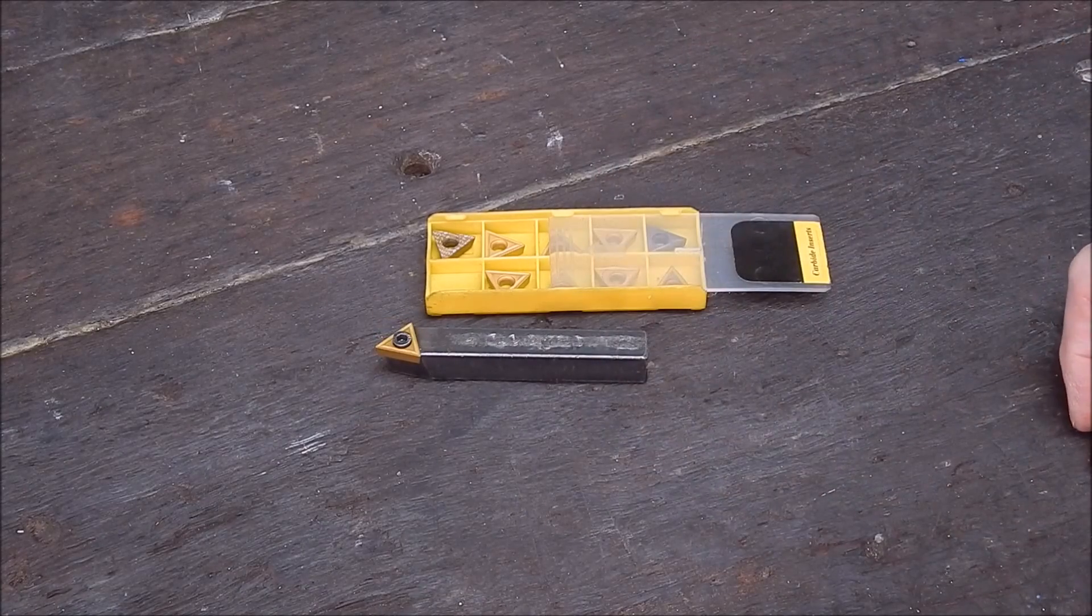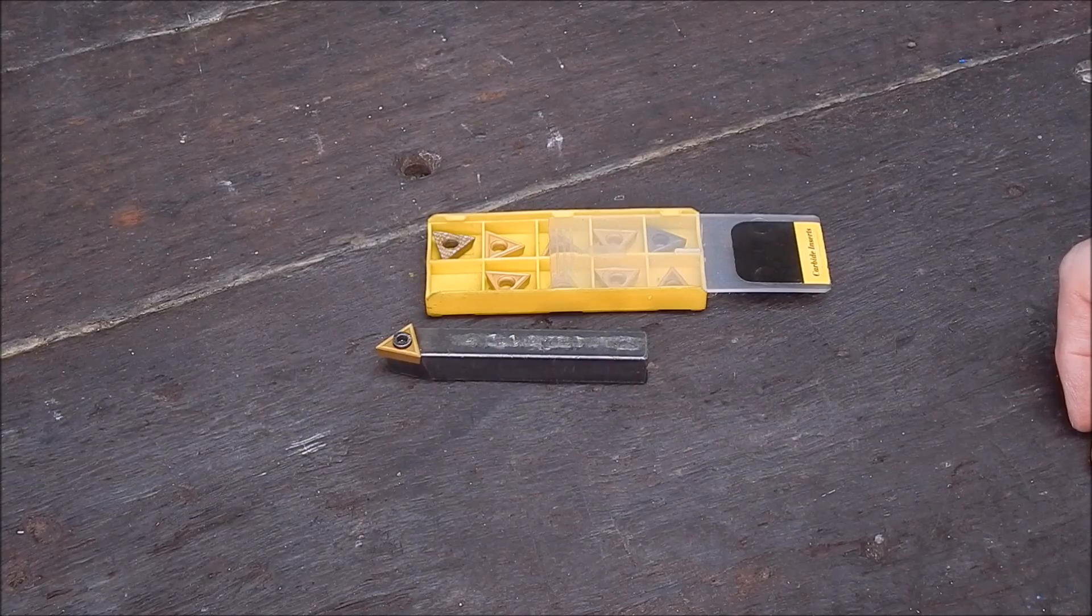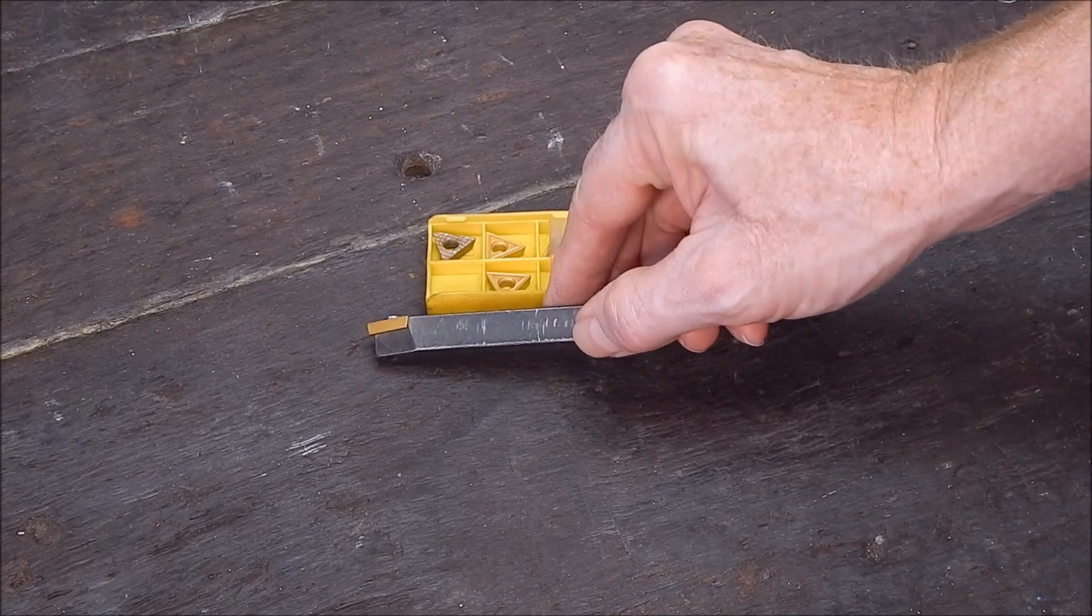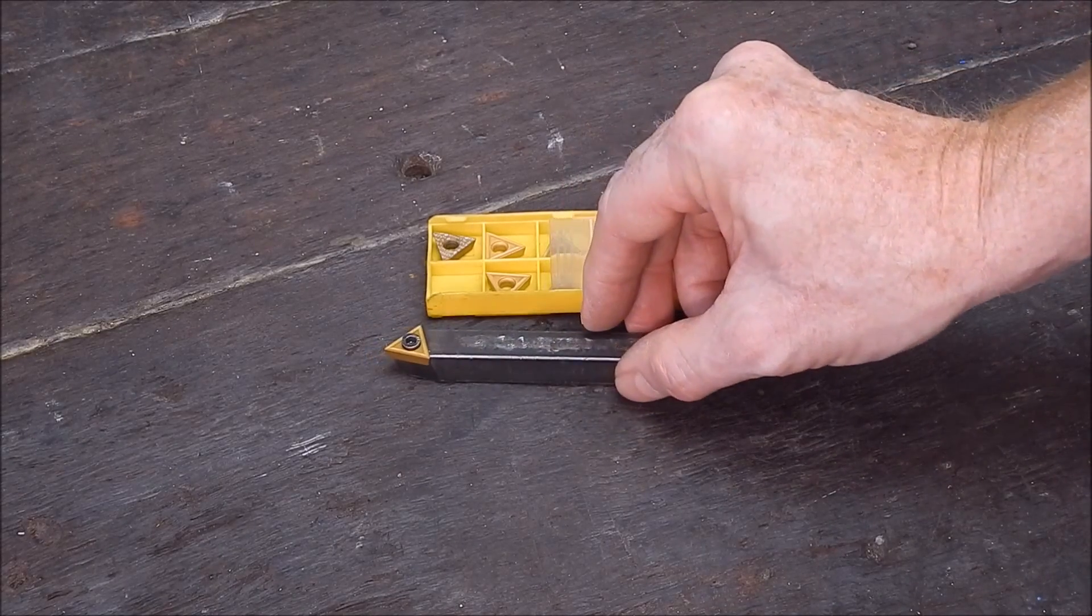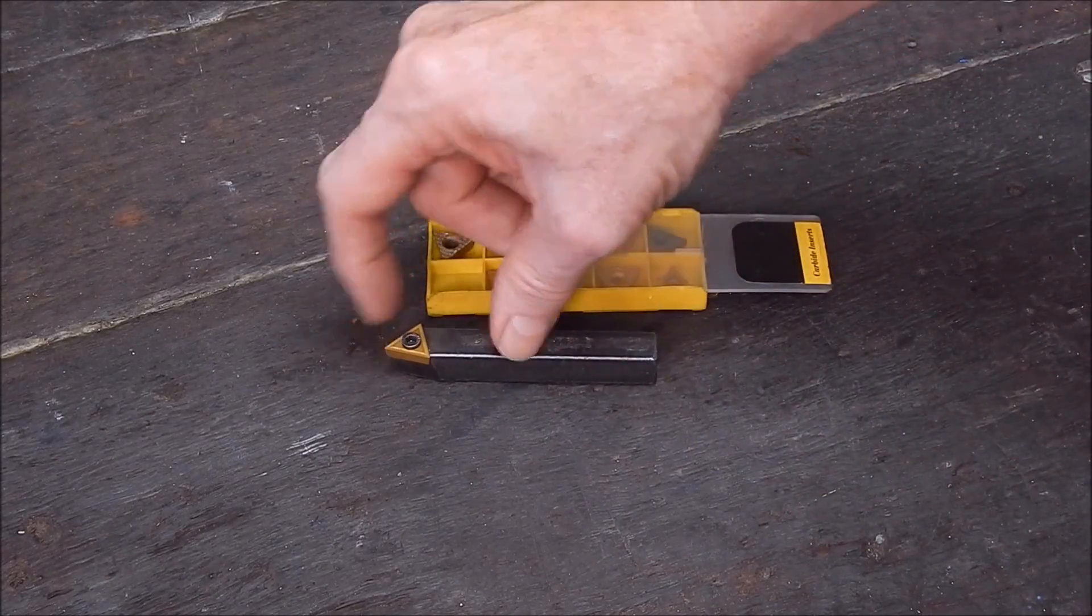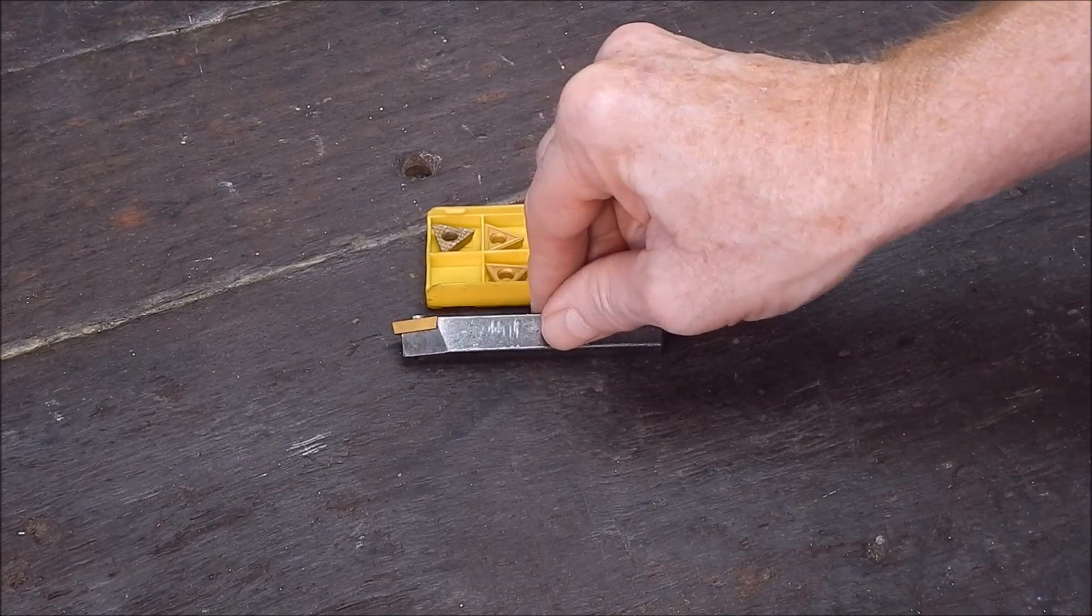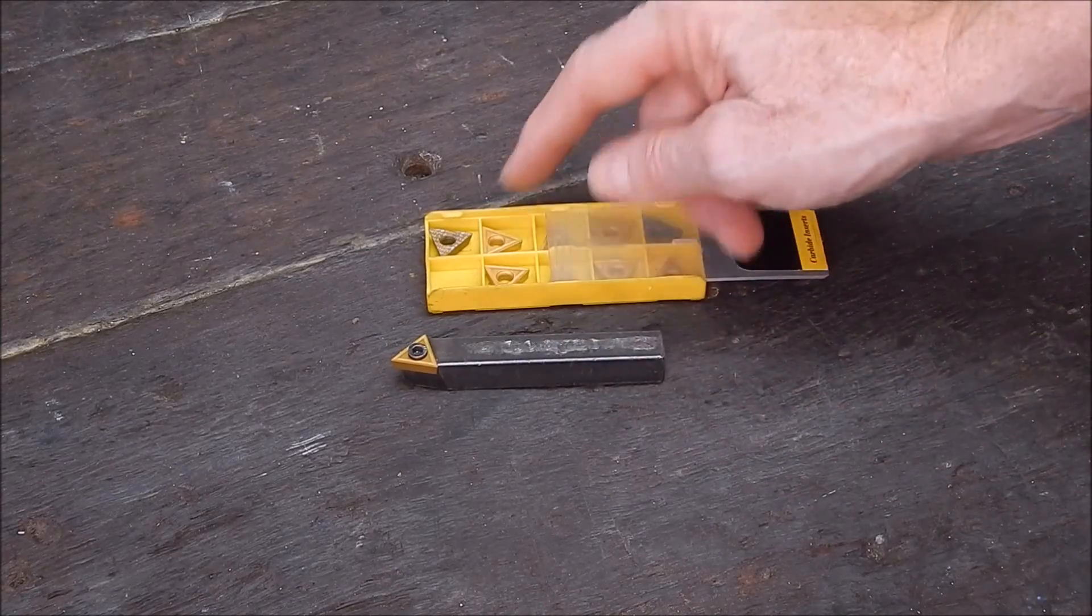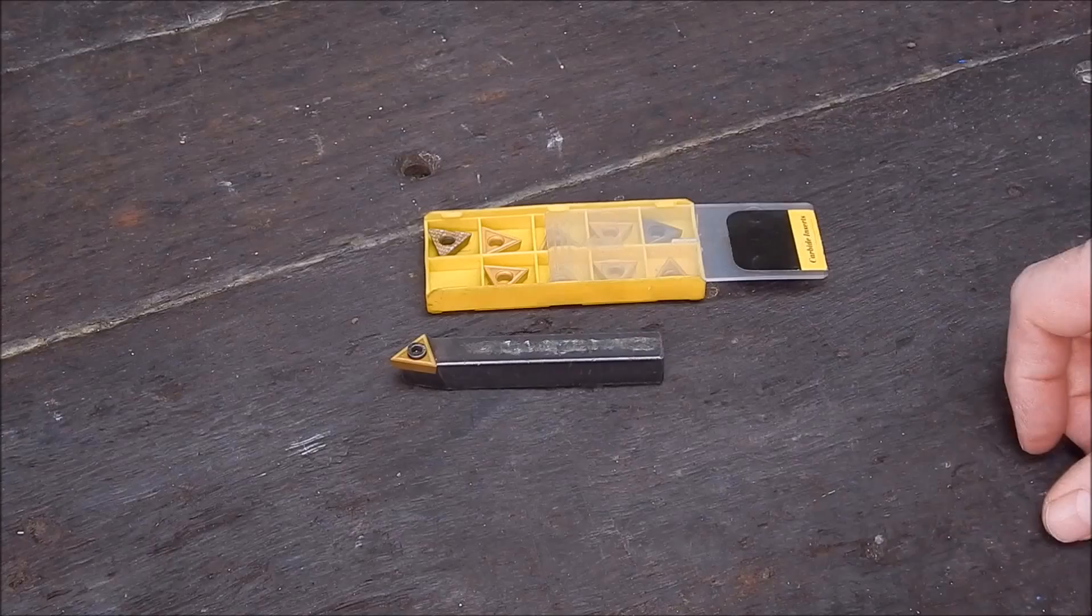I have got some 33 or 35 degree angle ones for profiling as well, but primarily this is the best sort of insert to use for a small lathe in my opinion. They've got a small radius, get them with positive rake, they don't put a big load on your lathe, and get a good quality like this tin coated and they last ages.